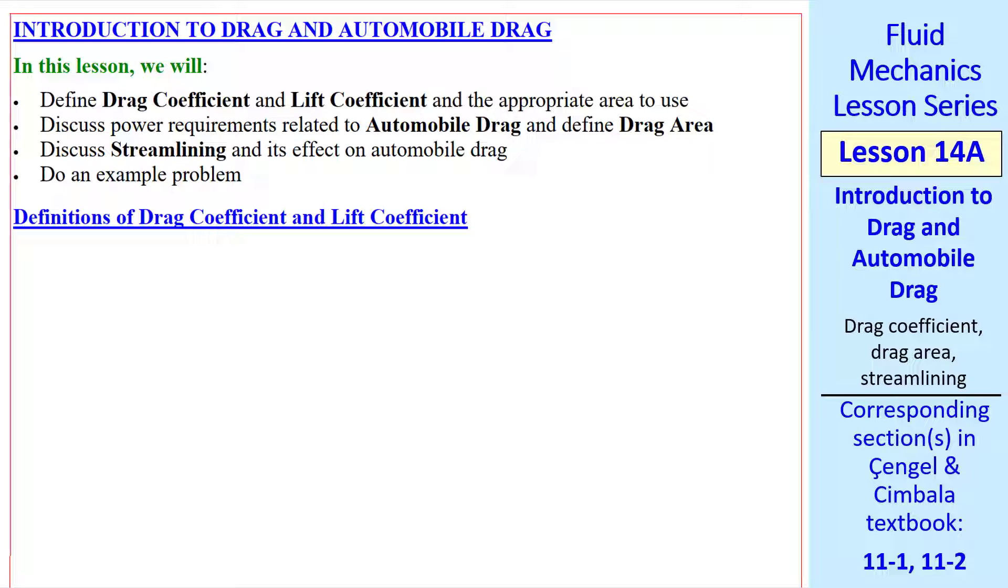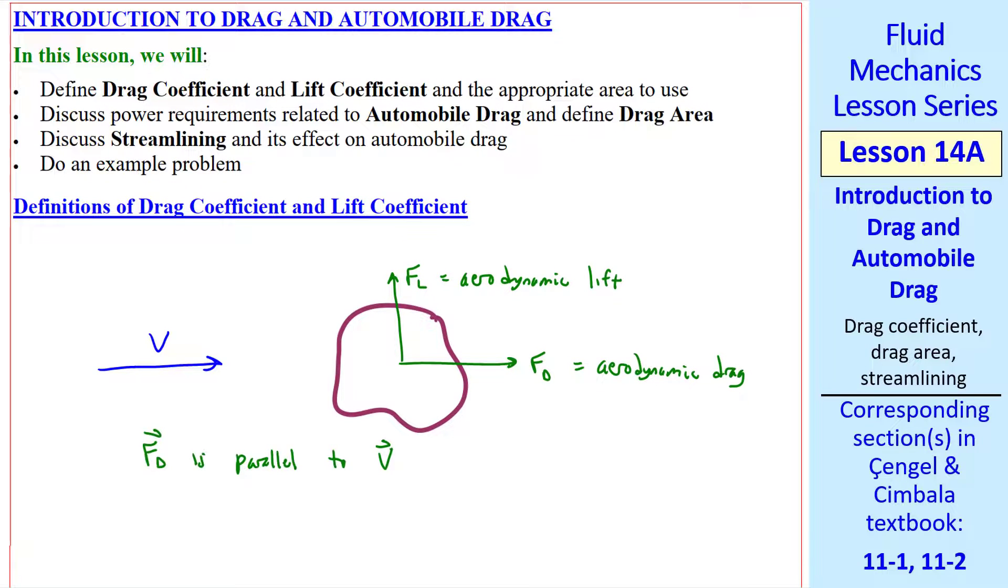First, some definitions of drag coefficient and lift coefficient. Consider an object in a free stream of speed v. Fd is the aerodynamic drag, and Fl is the aerodynamic lift. As sketched, the vector Fd is parallel to v, and vector Fl is perpendicular to v. These are not to scale in this diagram, because this body will have a very small lift compared to the drag.